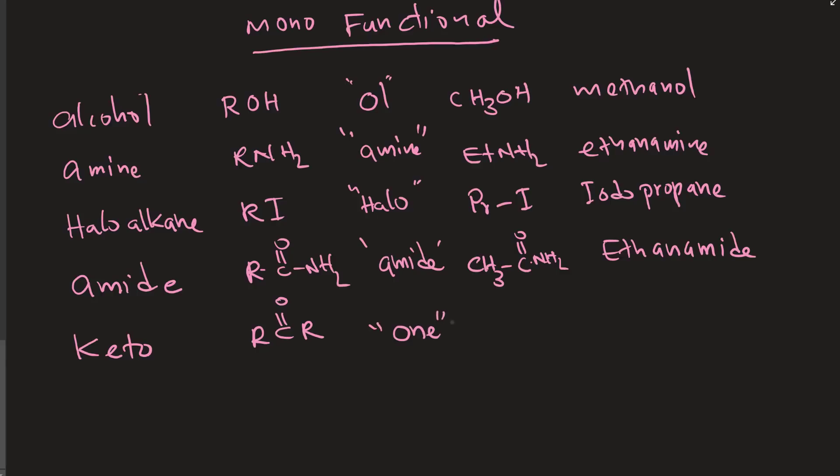The next one is keto, RC double bond OR. It's not one, it is on, ketone. So CH3C double bond O and CH3, that's actually two propanone because keto group on the second carbon.